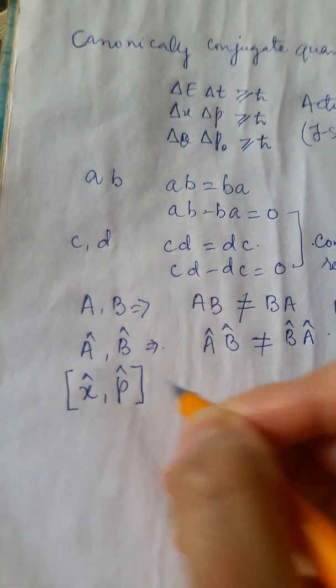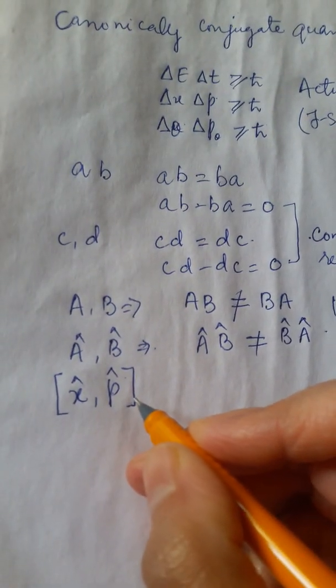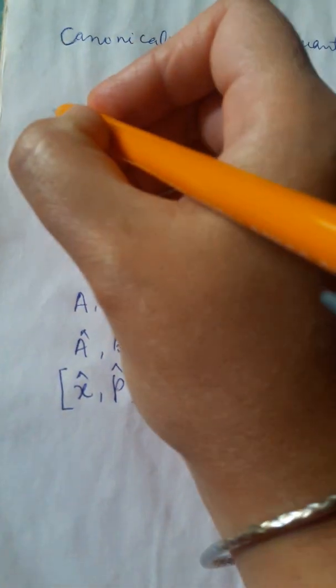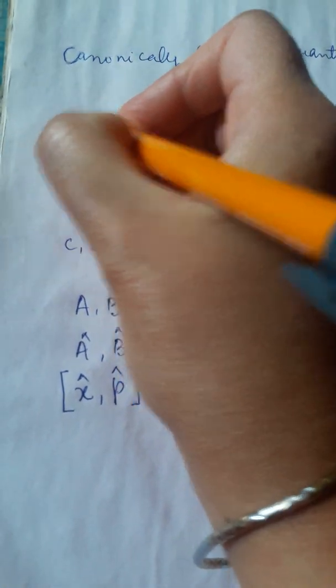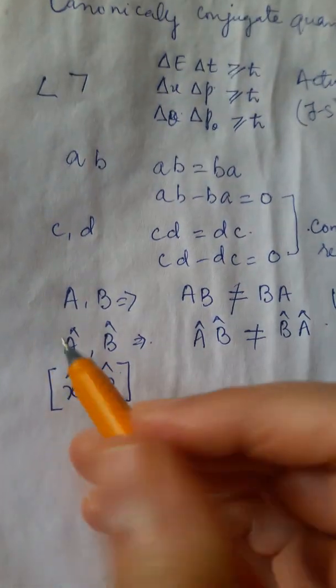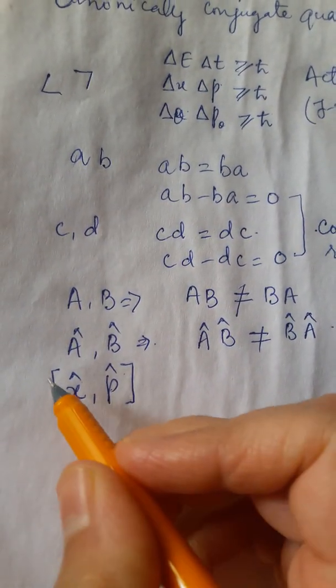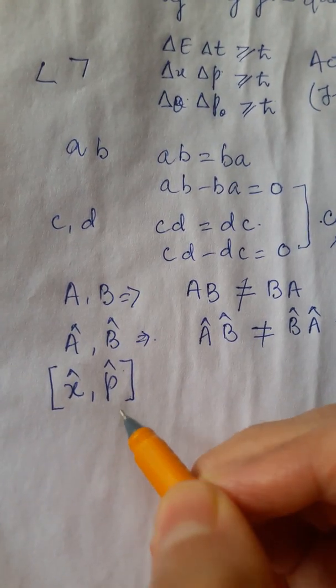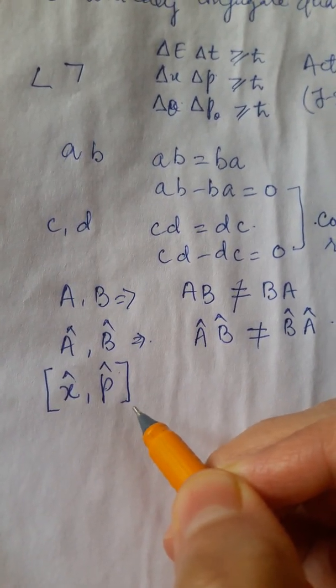And their commutator is denoted by this square long bracket. Remember, in quantum mechanics, I have told you that you have to be very specific about notations. As for instance, expectation value is denoted by curly brackets of this kind and not of any other kind. Similarly, a commutator between two quantities is represented by a square bracket, a long bracket of this kind and not of any other kind.